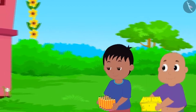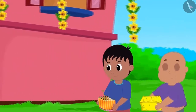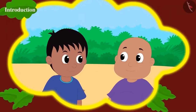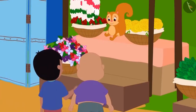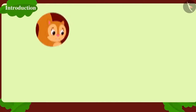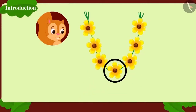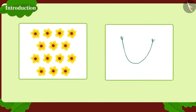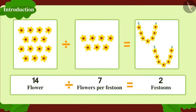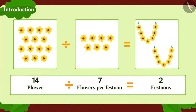When Raju and Bablu reached home, they saw their house was decorated with beautiful festoons. They thought why not buy festoons to decorate Jeev's flying saucer too. They ran to Chanda's flower shop. Chanda makes each festoon with a bunch of 7 flowers. If they want to decorate with 14 flowers, how many festoons will they need? If we divide 14 flowers into festoons of 7 flowers each, we will get 2 festoons.